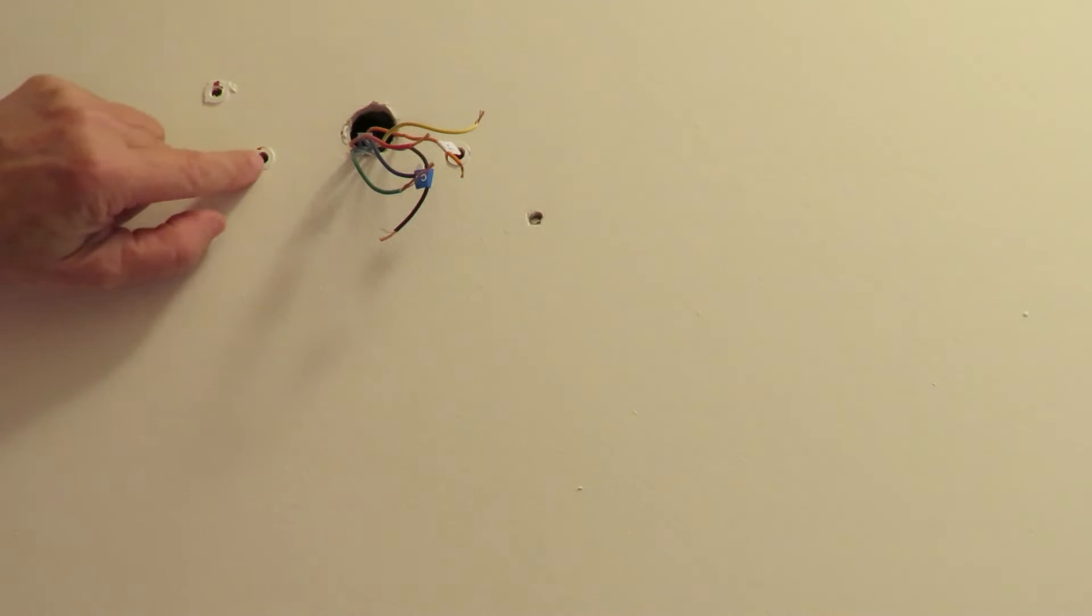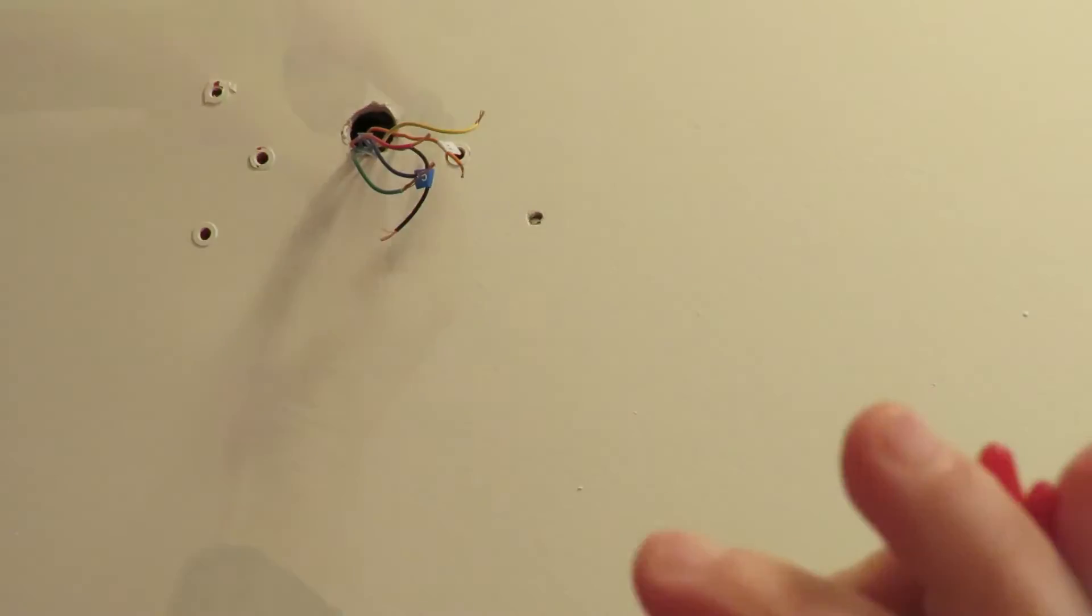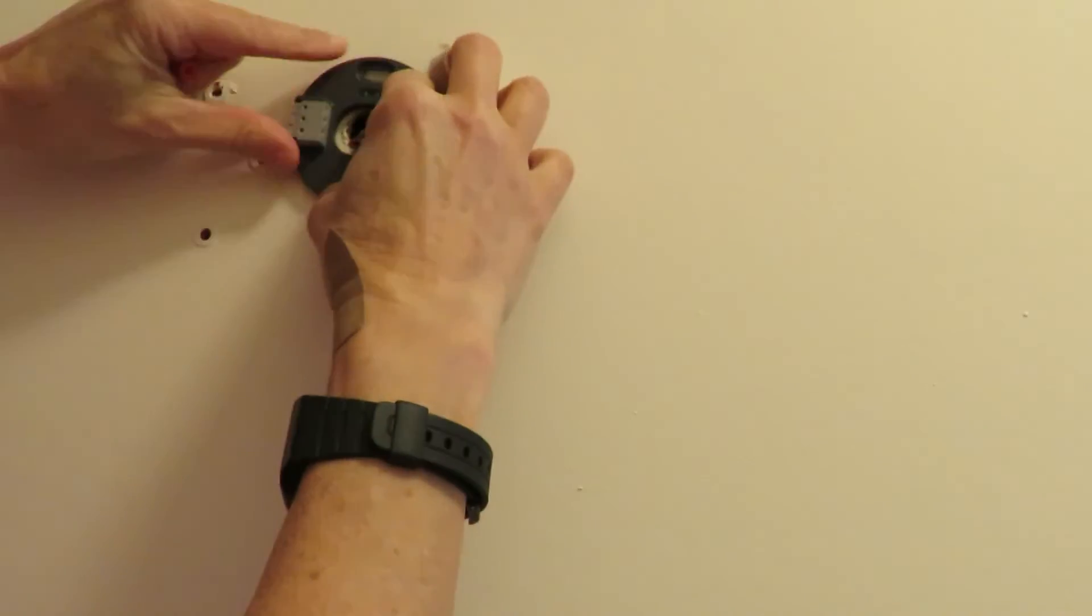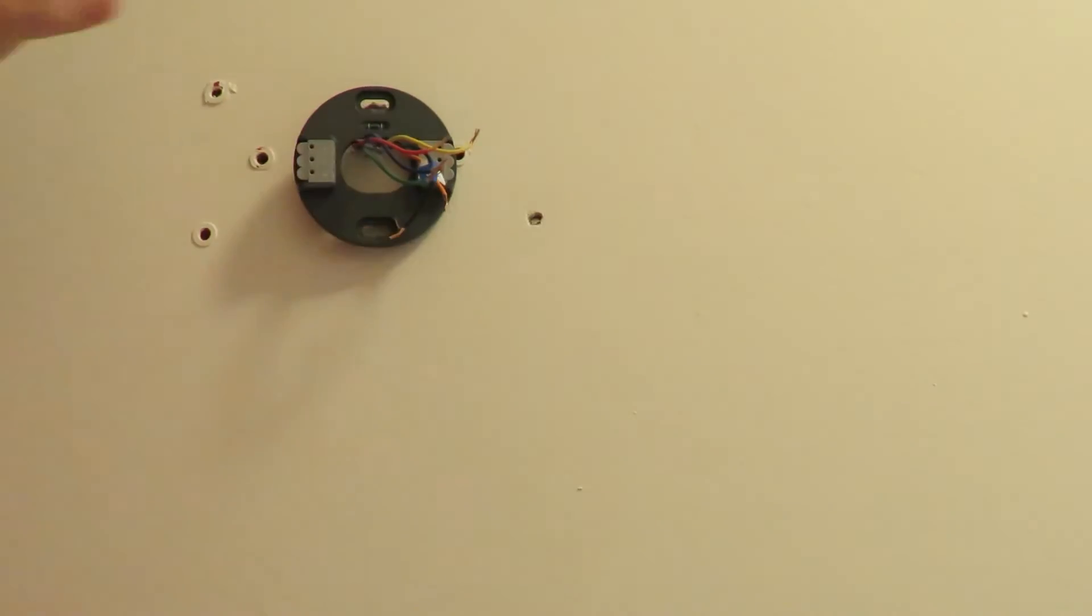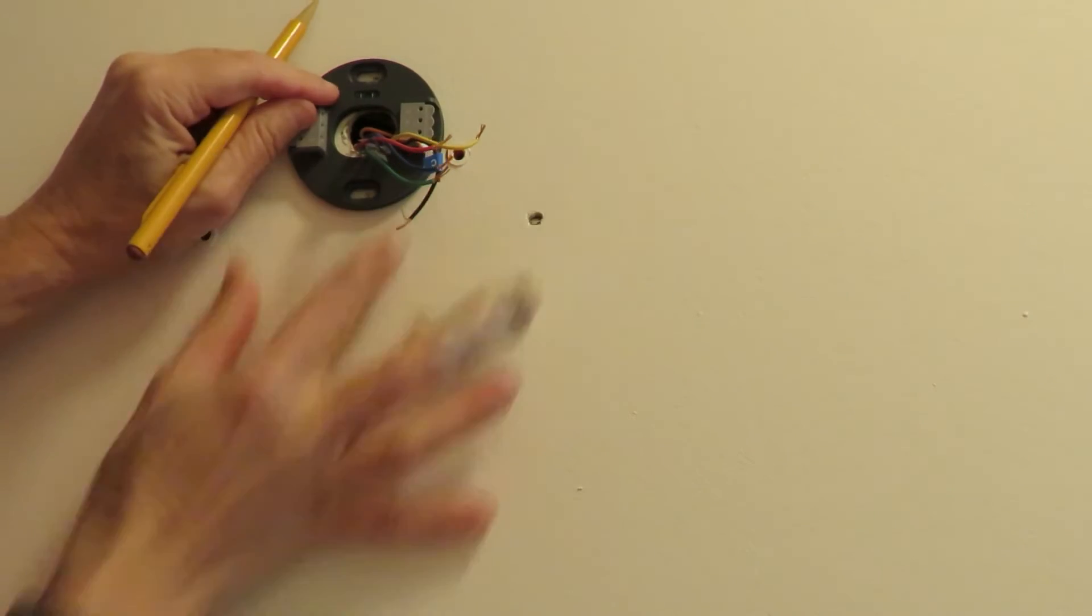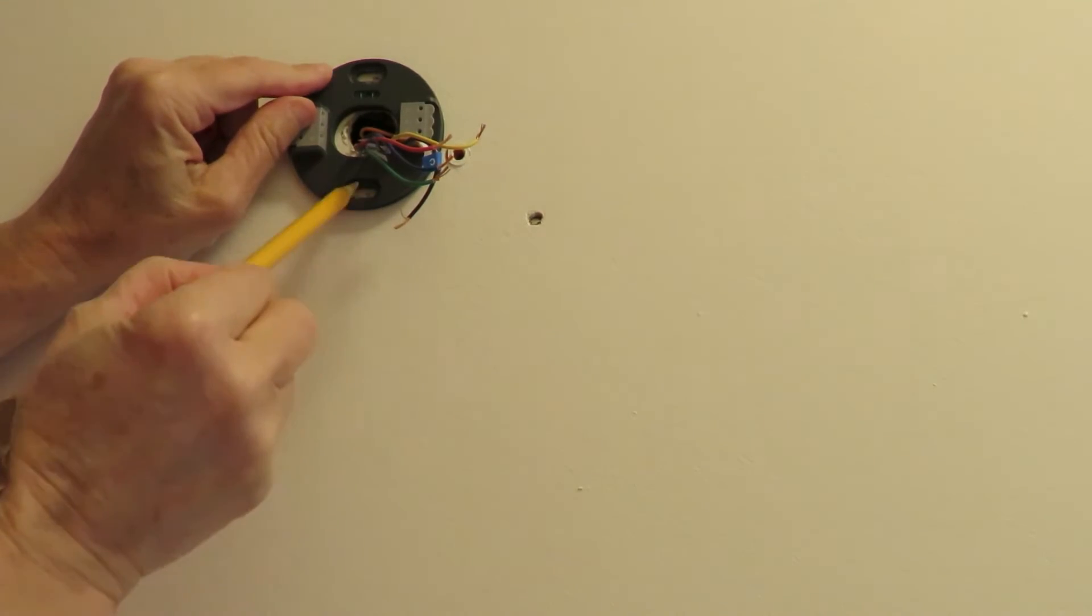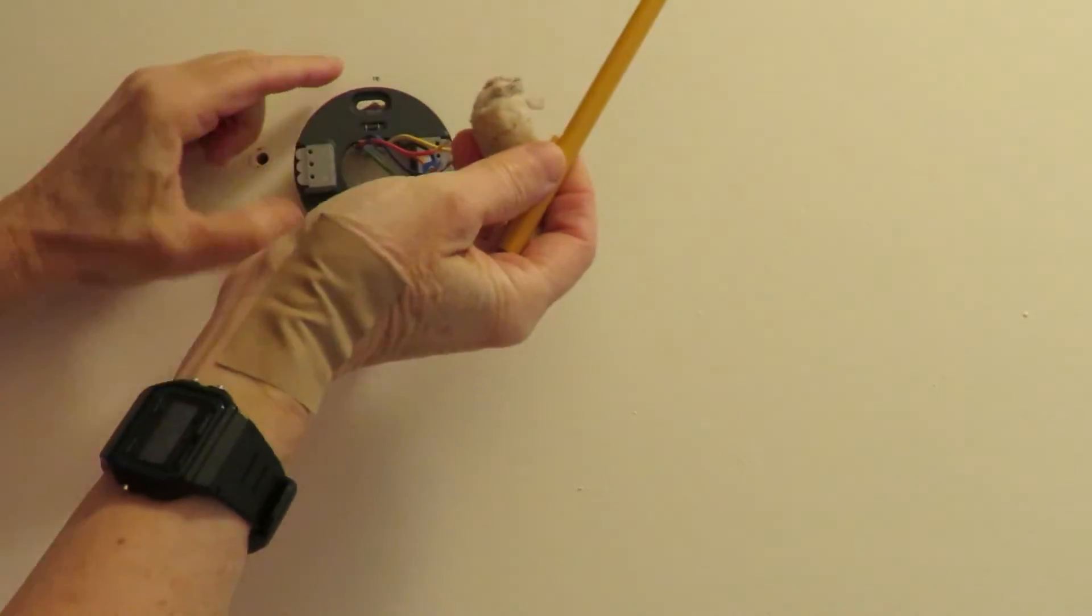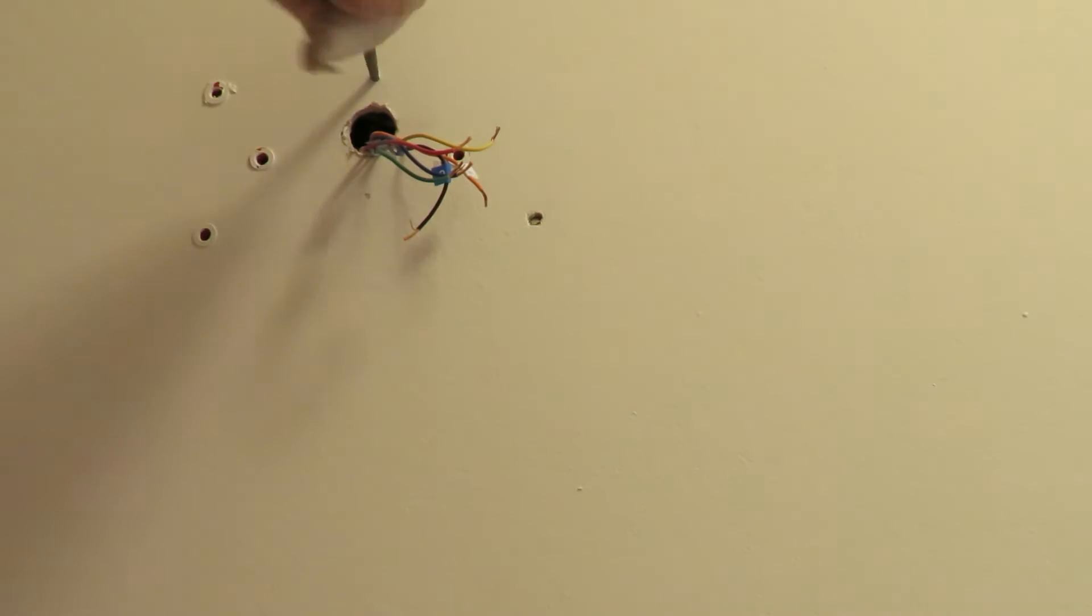Since the holes from the previous thermostat don't match those of the nest, I'm going to use some wall anchors. And I'm going to install the wall anchors in such a way that I can screw the nest to the wall. So I'm going to mark the holes with a pencil, and then I'm going to use an awl to dig the holes into the wall, which is not that difficult to do.